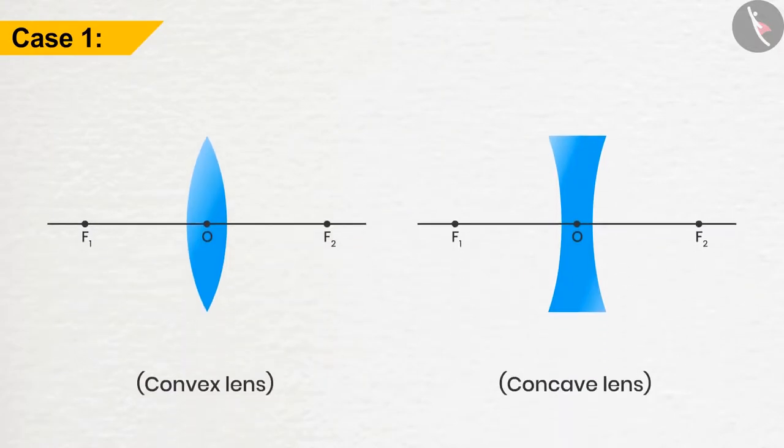In case 1, if the ray of light is traveling parallel to the principal axis, after refraction it passes through the focus located on the other side of the convex lens and appears to diverge from the focus located on the same side of the concave lens.